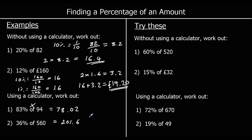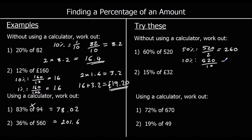Practice questions. Without a calculator: sixty percent of five hundred and twenty. We can find fifty percent by halving: five hundred and twenty divided by two is two hundred and sixty. And ten percent by dividing by ten: five hundred and twenty divided by ten is fifty-two. So sixty percent is fifty percent plus ten percent: two hundred and sixty plus fifty-two.